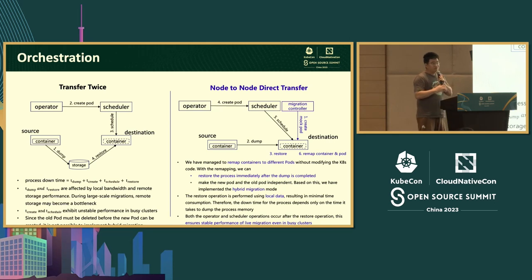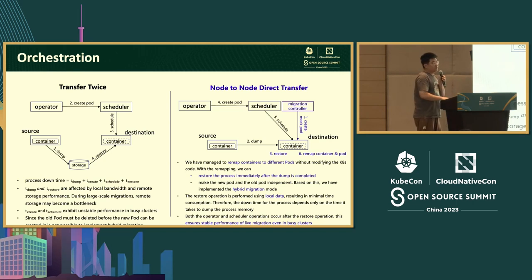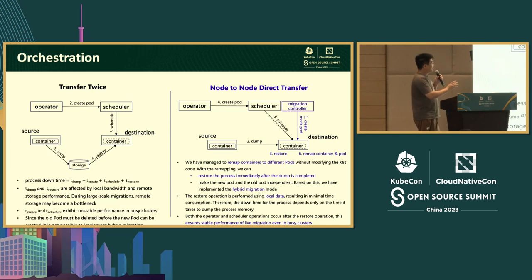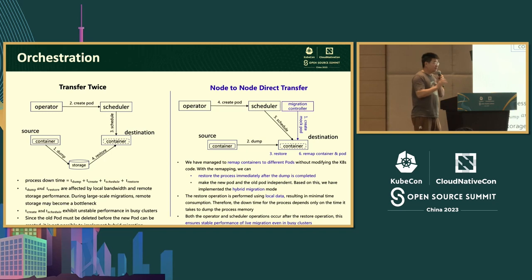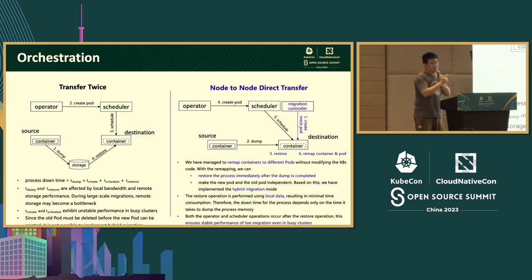Additionally, Pod creation and scheduling in K8S are asynchronous and their duration is non-deterministic — especially in a large or busy cluster. While that's normal for K8S, it's critical for live migration. Finally, in this flow the old and new Pods have a dependency relationship — the first Pod must be killed before the second can exist. This dependency prevents Hybrid migration, which requires both processes to be alive simultaneously so the new process can fetch remaining data on-demand from the old one.